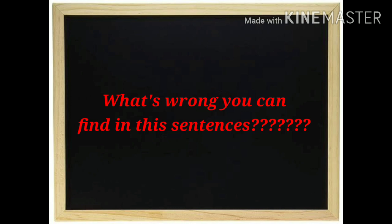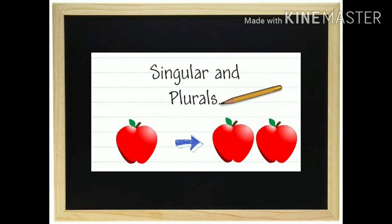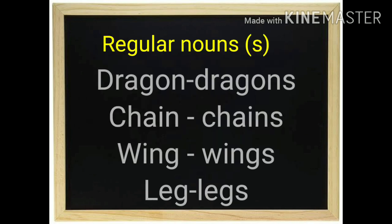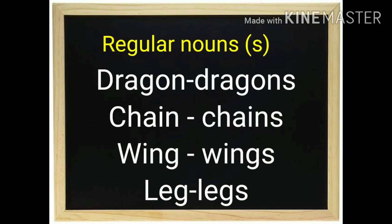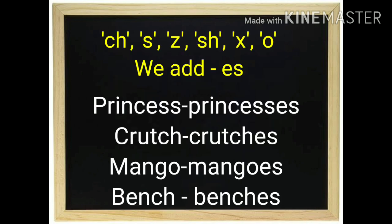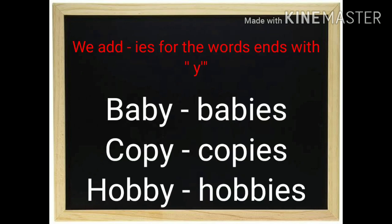Yes, all the sentences are in singular form — but they should be plural: two legs, two princesses, two crutches. Now we are going to learn about singular and plural forms. For regular nouns, we add only S — dragon, dragons; chain, chains; wing, wings. For words ending with CH, S, Z, SH, X, or O, we add ES. For words ending with Y, we add IES — baby, babies; copy, copies; hobby, hobbies.